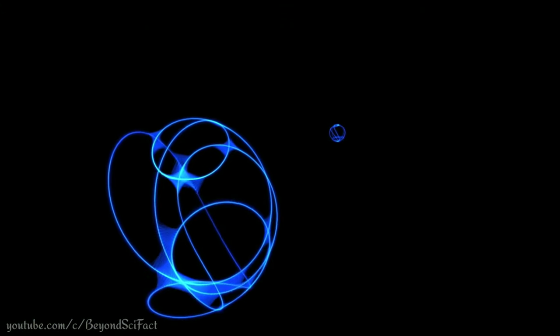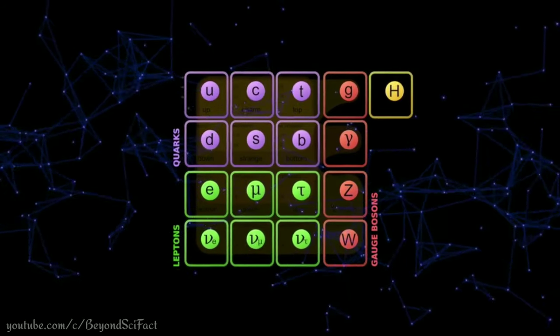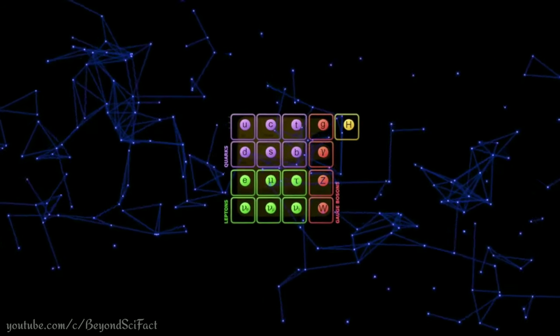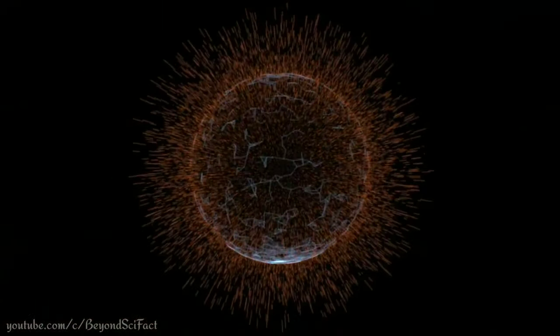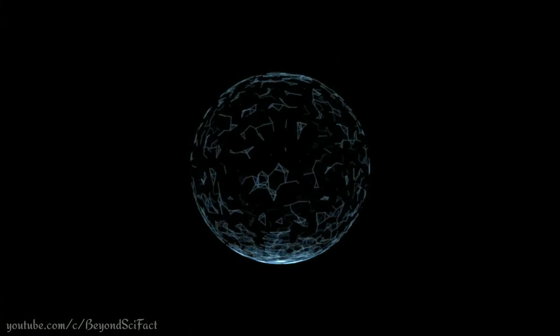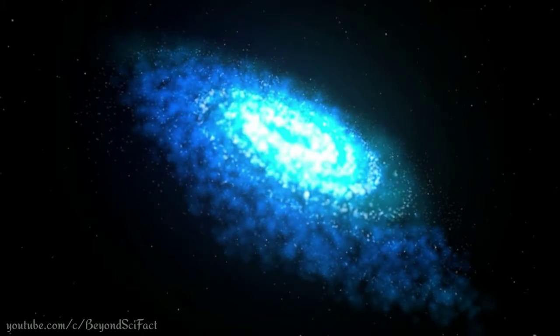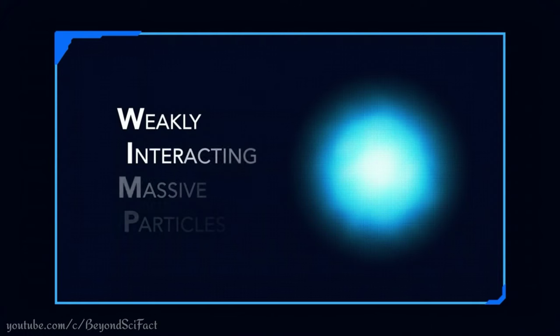Also, physicists were able to exclude dark matter particles of masses up to about 500 GeV and having energy up to 2 TeV. This finding places the strongest limit so far on Higgs boson transformation to such invisible particles. The new result advanced the search of weakly interacting massive particles.